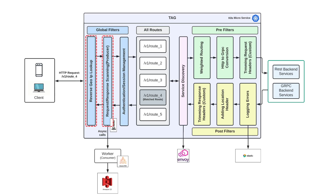The second step is request-response scanning — also a global filter that captures the schema of the request, not the data attributes, for GDPR reasons. For example, Amazon MSK is used to securely stream the data, which can be consumed by application downstreams for use cases like automatic schema generation and bot detection. We also have session management as a global filter, basically a centralized filter written into TAG to validate, update, and control session management. Then, as we get into routes after these filters have been applied, we have predicate matching — the path of an incoming request is matched with one of the deployed routes.